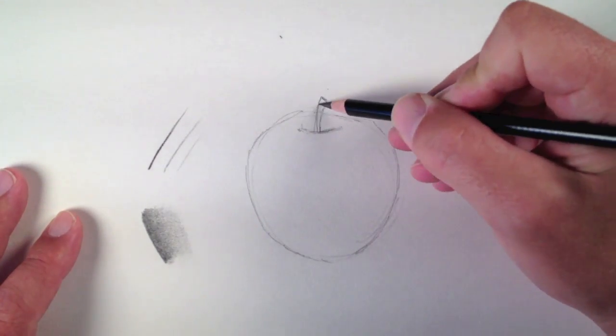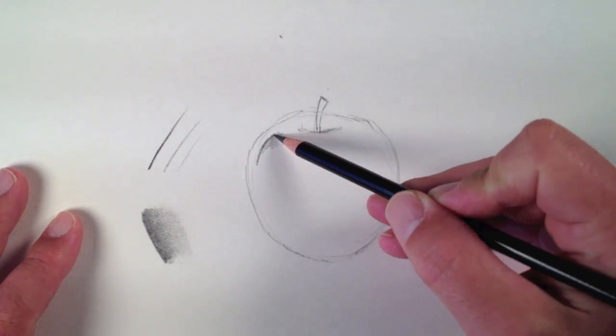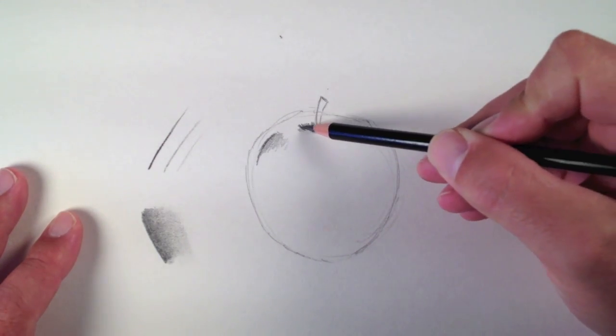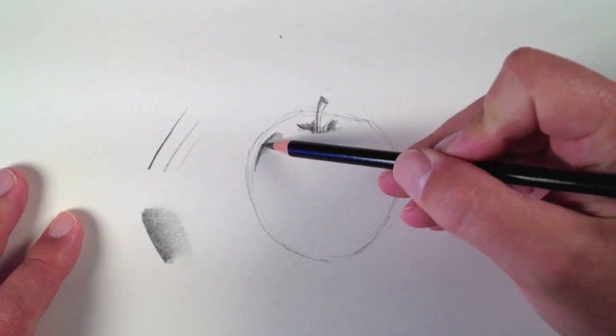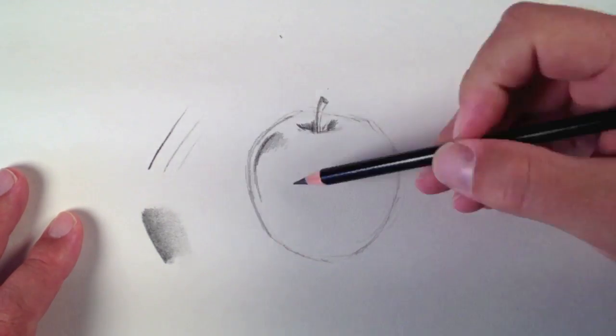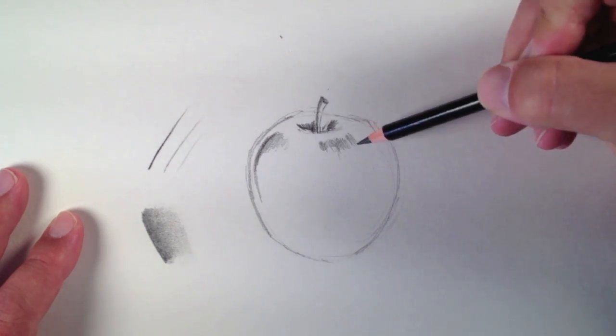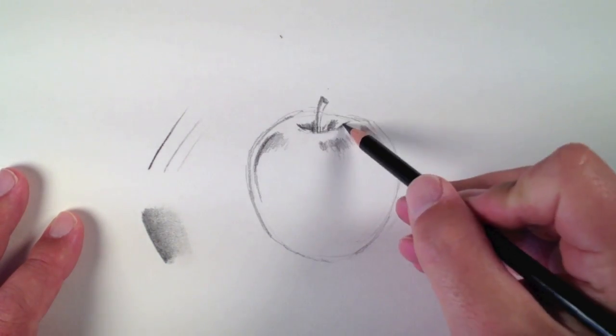And I can also go ahead and just start adding those values in, the darker values if I want to. So I don't have to switch back and forth between several different grades of graphite. I've got all the marks that I need right here in this one pencil.